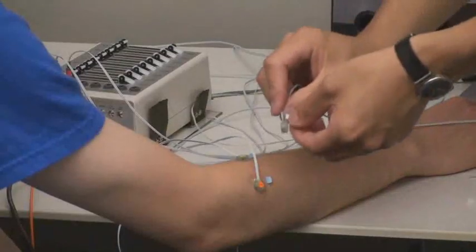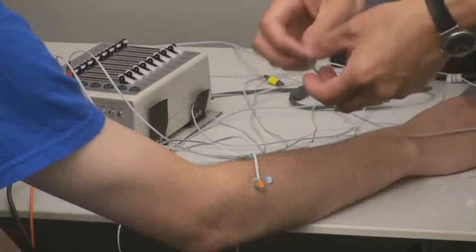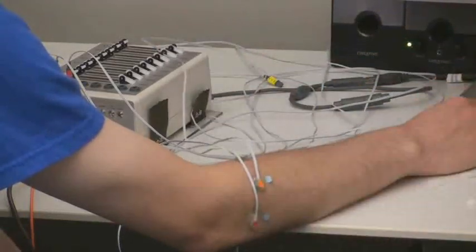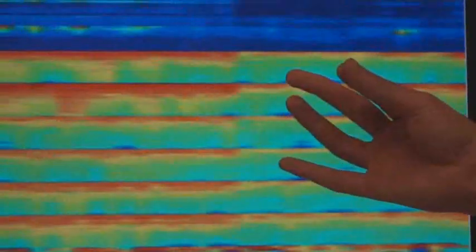The muscle computer interfaces we present here allow a user to interact with the computer using hand and finger-based input without holding physical input devices. We use forearm electromyography, or EMG, to directly decode muscle signals from the surface of the skin.